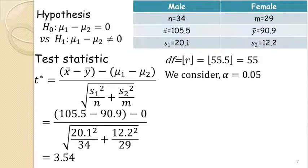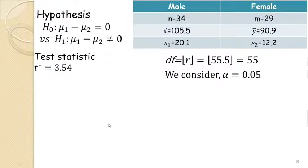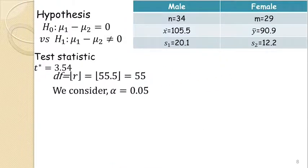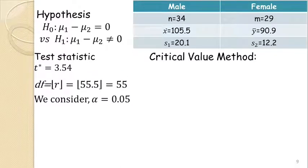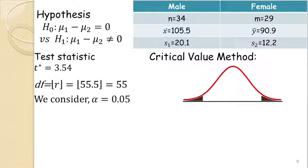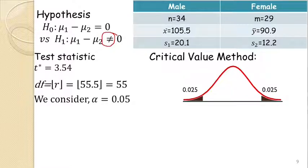The level of significance is 0.05. Setting aside the hypothesis formulation and computational parts, we keep the T* value, degrees of freedom 55, and alpha = 0.05. We proceed using the critical value method. Since our alternative hypothesis is 'not equal to', the critical value will be on two sides. With α = 0.05, each tail gets 0.025.